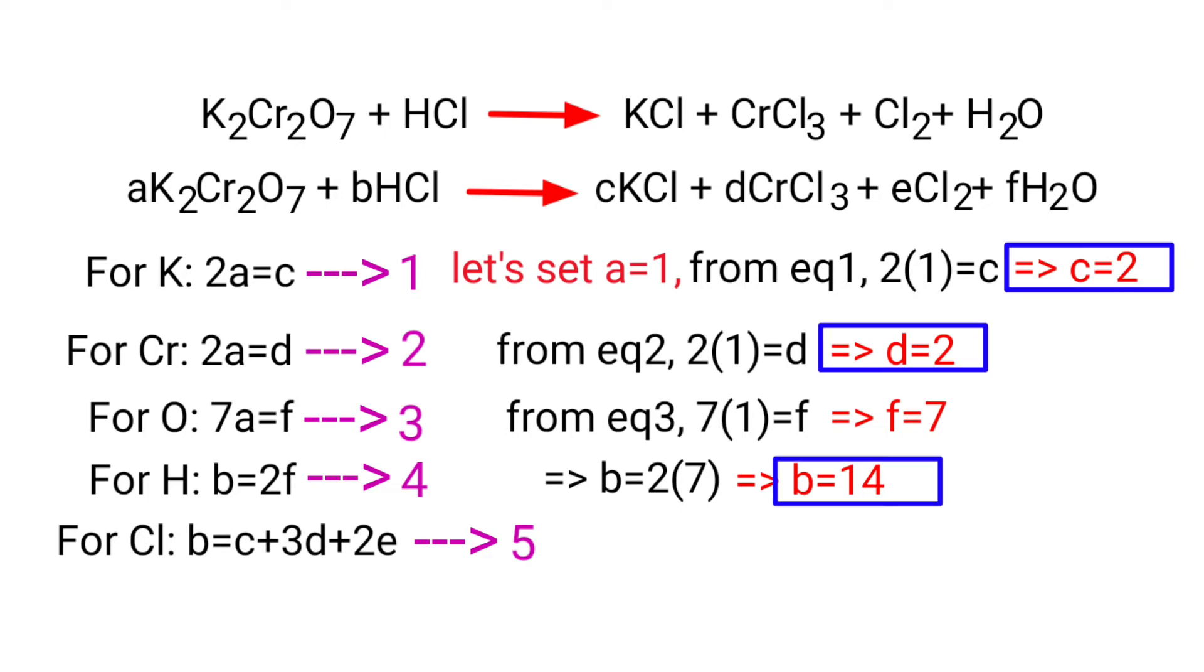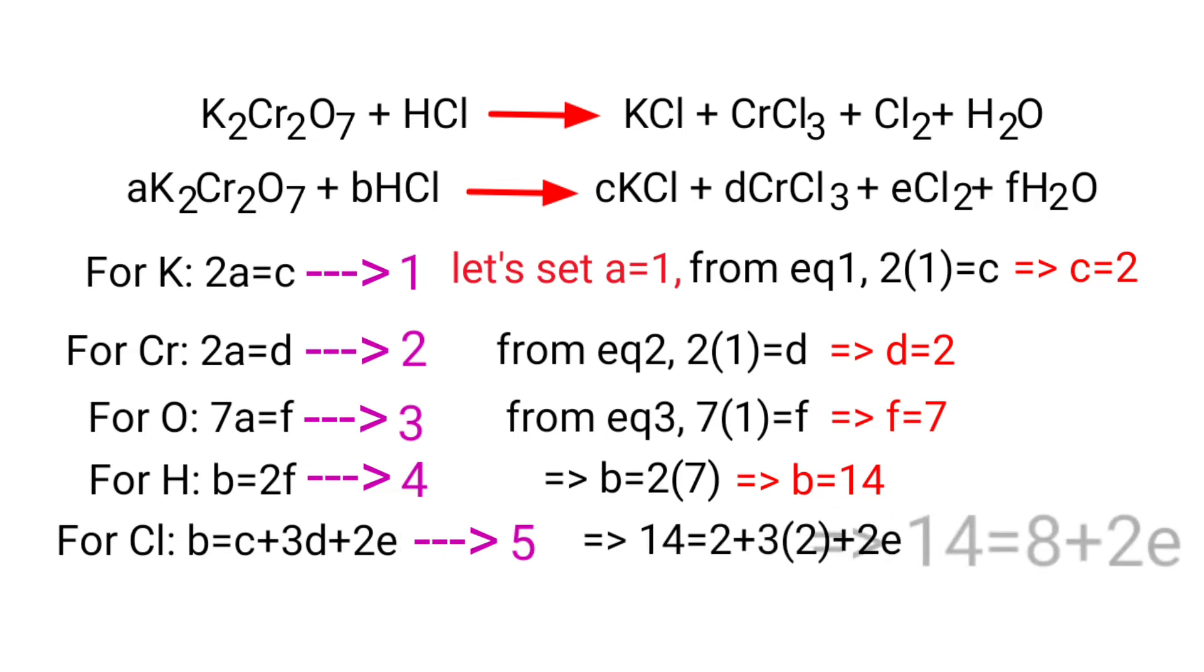Now apply the b, c, and d values in equation 5. Then 14 equals 2 plus 3 into 2 plus 2e. So 14 equals 8 plus 2e. So 2e equals 14 minus 8, that equals 6. Therefore e equals 6 by 2, that equals 3.